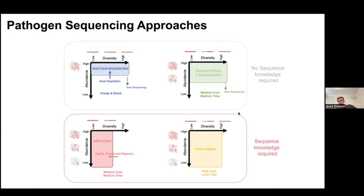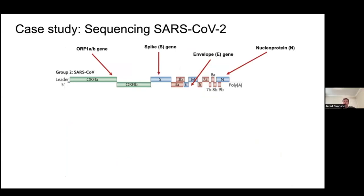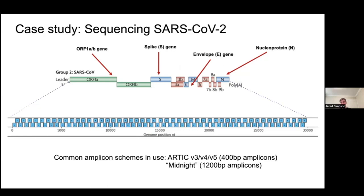I'm going to use SARS-CoV-2 as a case study of how we implemented a large-scale viral genome sequencing project at national scale across Canada. We used an amplicon-based approach because it's a fairly short genome — about 30,000 bases — and it's an RNA virus, which means we can amplify the genome in a series of amplicons. Early in the pandemic, Josh Quick from the University of Birmingham designed an amplicon panel for SARS-CoV-2 called ARCTIC, using two pools of 400 base-pair amplicons. The original version had about 98 amplicons spanning the entire genome.